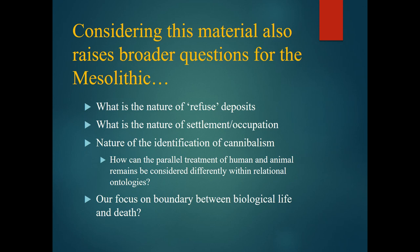How can we think about the identification of cannibalism, which at an osteological level is fundamentally based on equivalency between the treatment of human and animal bone — assuming animals are always butchered for food, and that equivalent treatment of humans therefore means they were eaten too? How do we think about that if we're also talking about relational ontologies for the Mesolithic? And can we think about what this says about our concern with the boundary between biological life and death, and where identity and the life of a person ends, and how that might continue with these remains? That was a whirlwind tour — thank you very much.